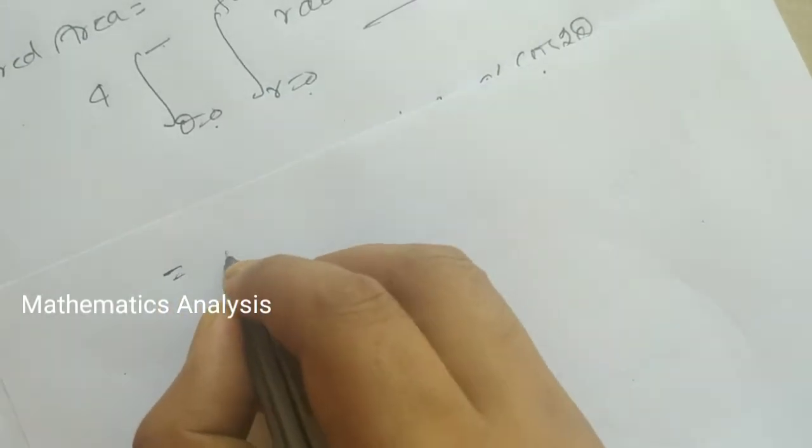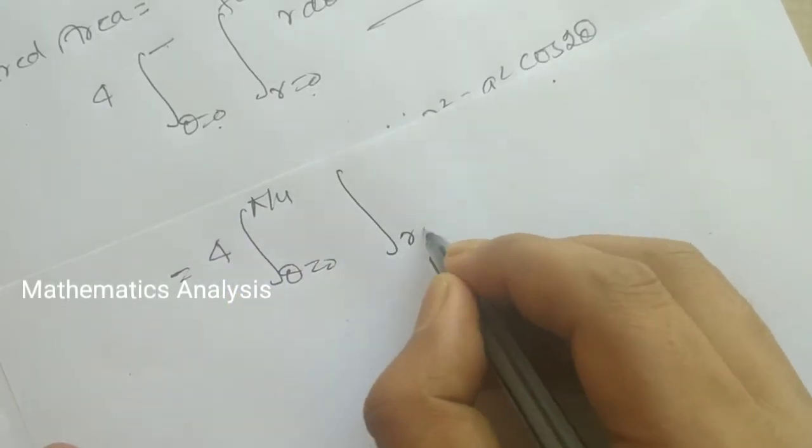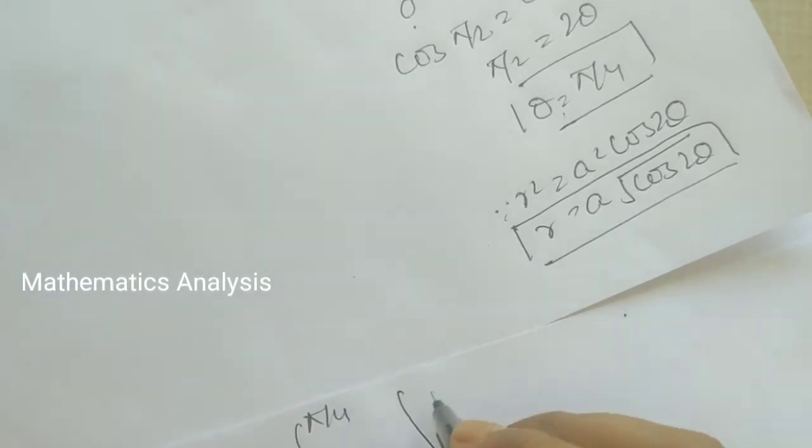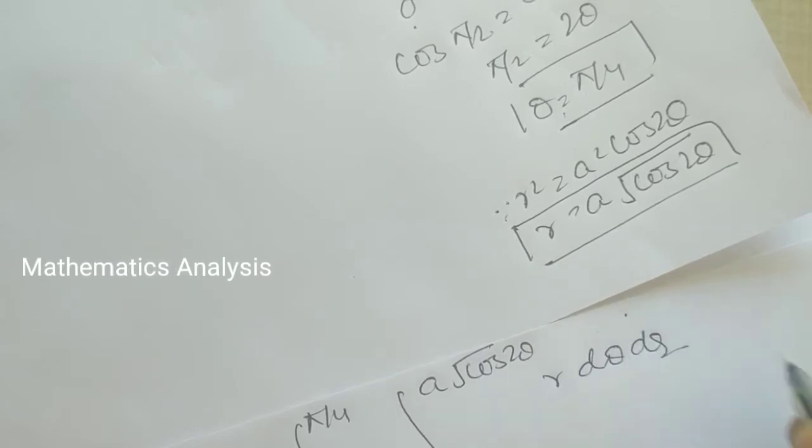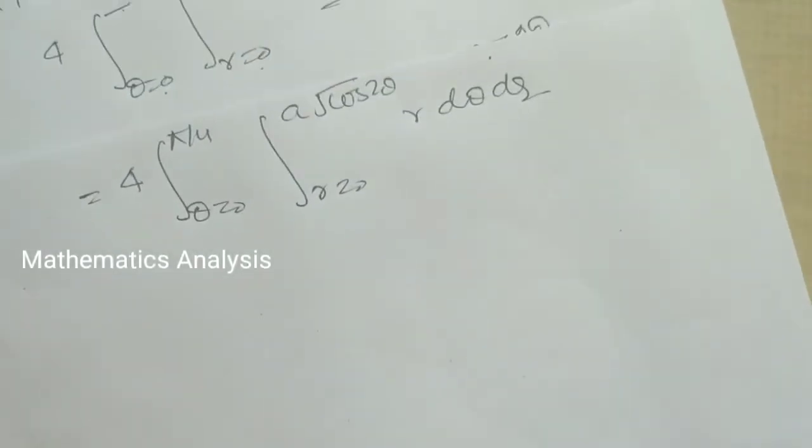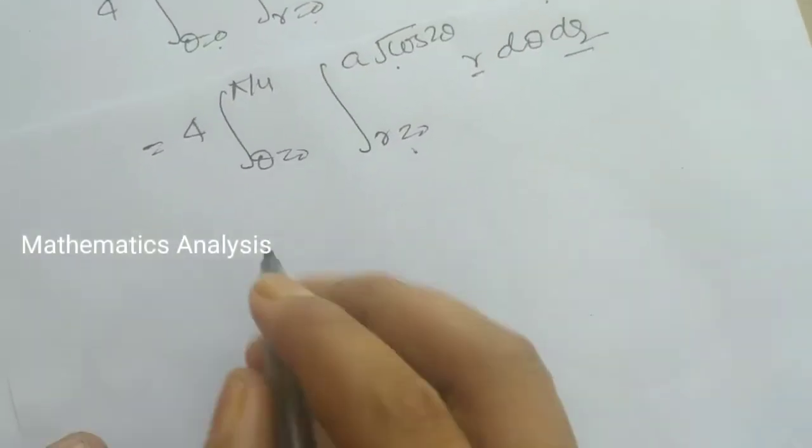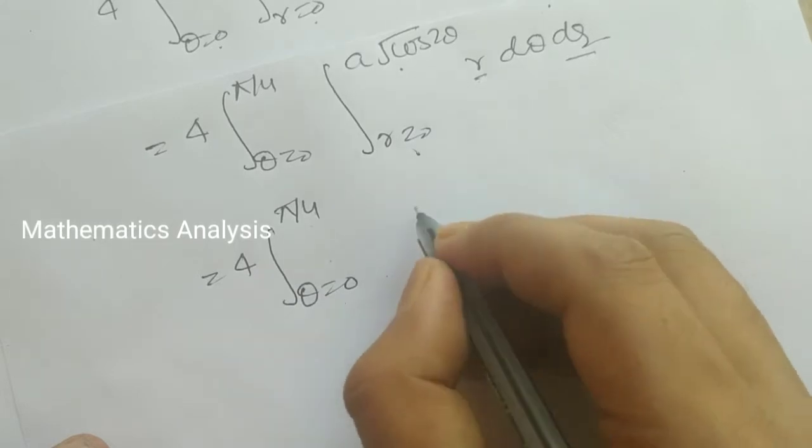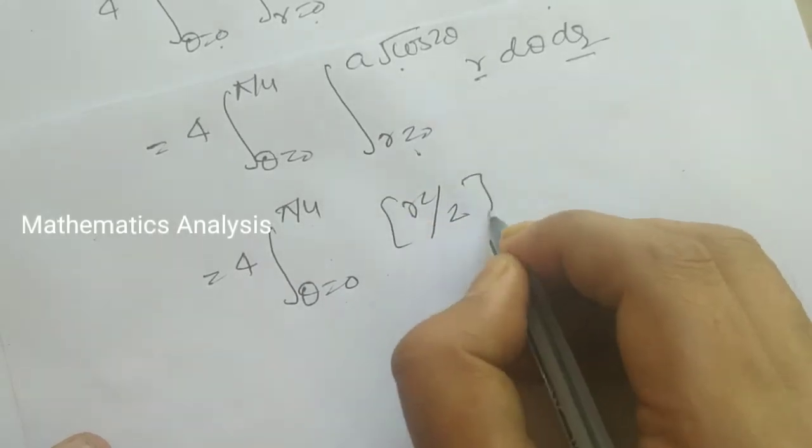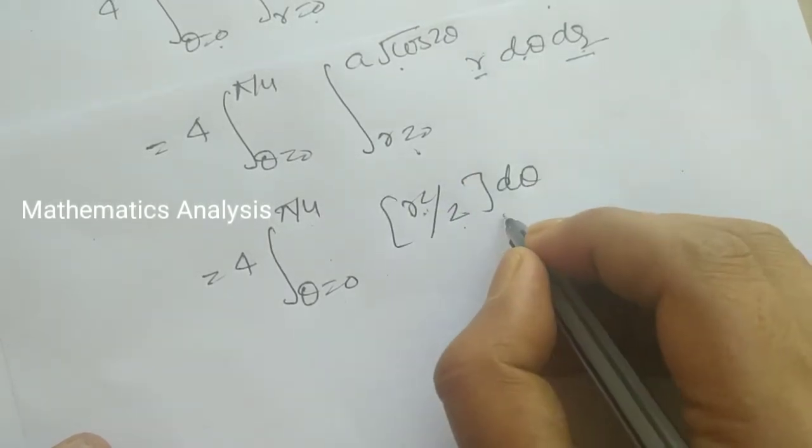Now let's see our required area. From 0 to π/4 for theta, 0 to square root cos 2θ for r, and the formula is r dθ dr. Now I will solve it.